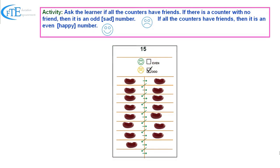Ask the learner if all the numbers have friends. If there is a counter with no friend, then it is an odd or a sad number. If all the counters have friends, then it is an even or a happy number.